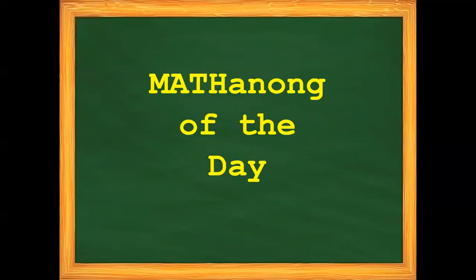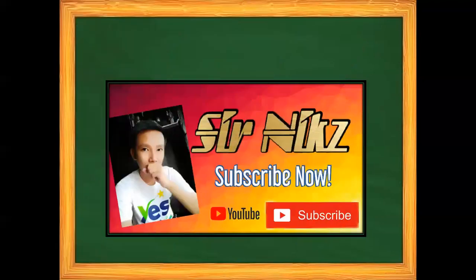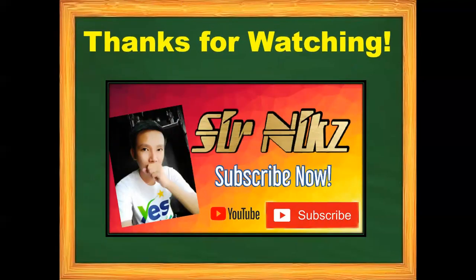And for our challenge of the day: multiply 95 hundredths to the sum of 2 and 34 hundredths and 5 and 67 hundredths. Thanks for watching — do not forget to like, comment, share, and subscribe!